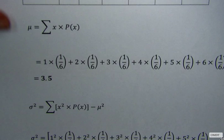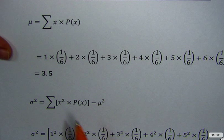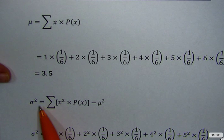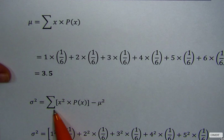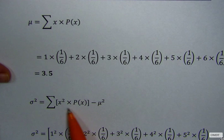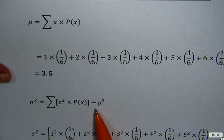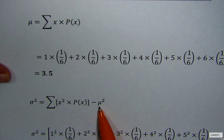Next, we have to calculate the variance before we can calculate the standard deviation. So the variance is equal to the sum of x squared times P(x), minus the mean squared.